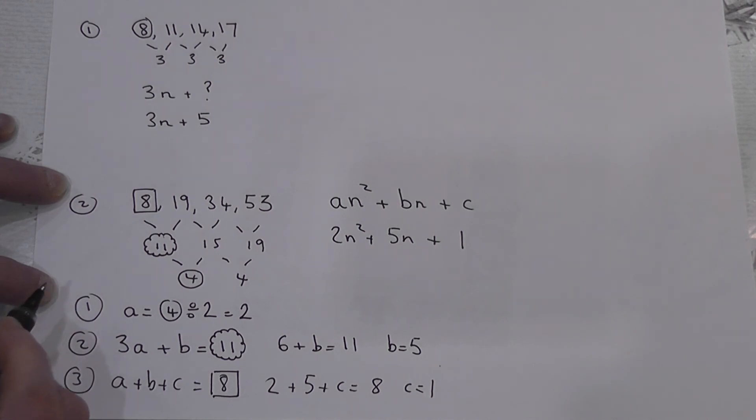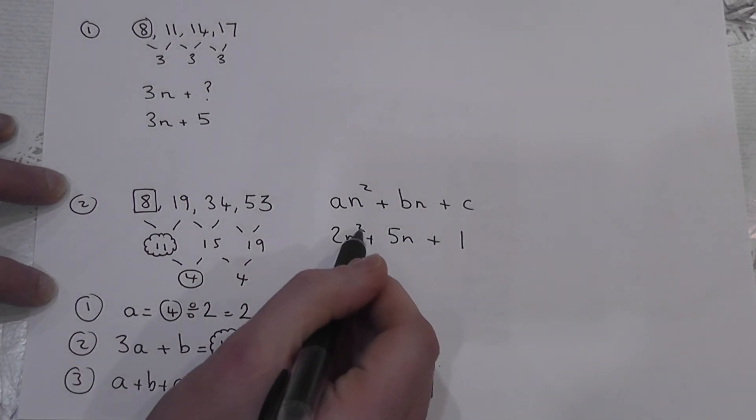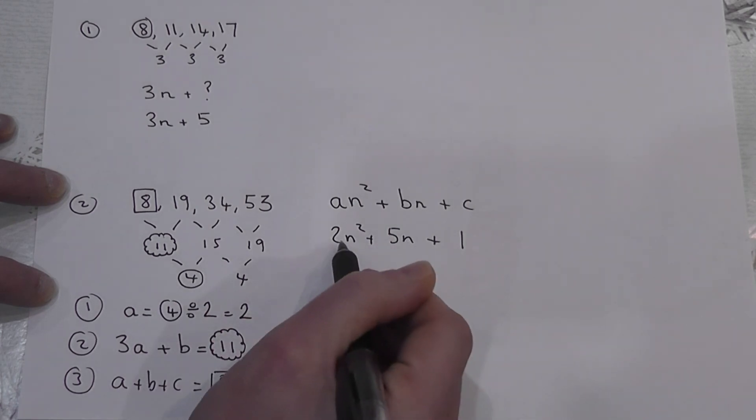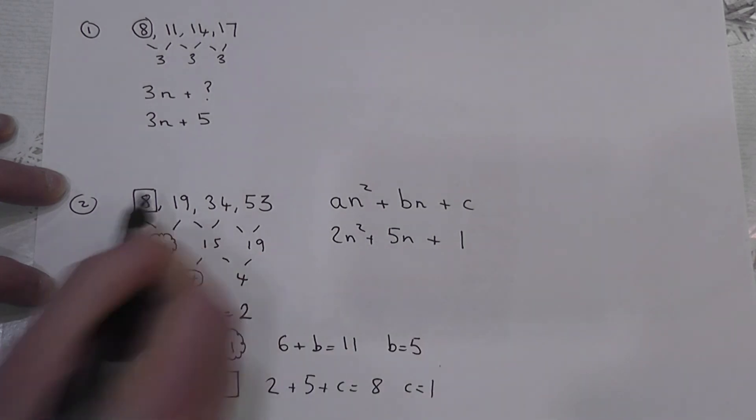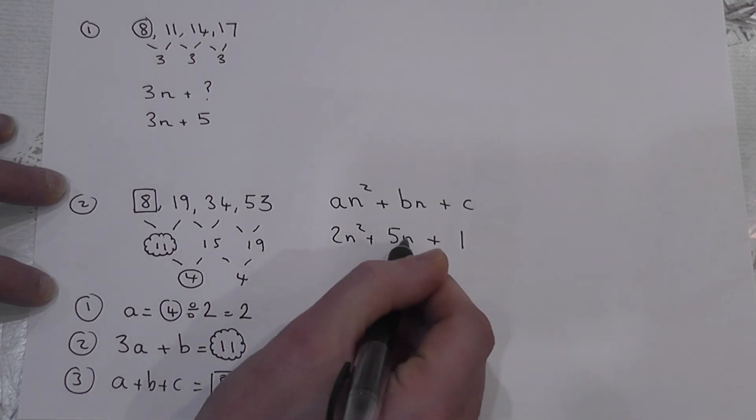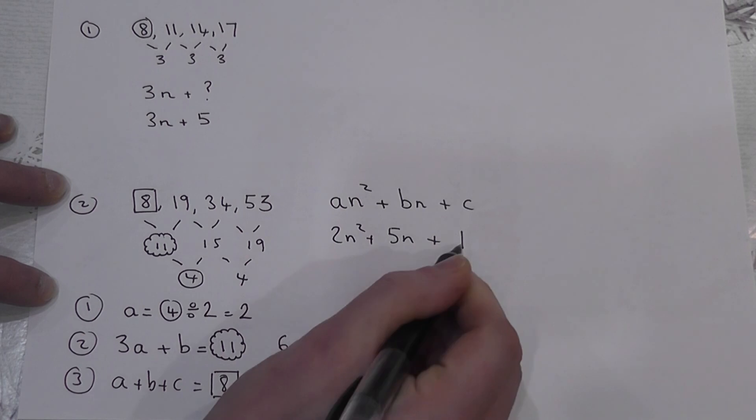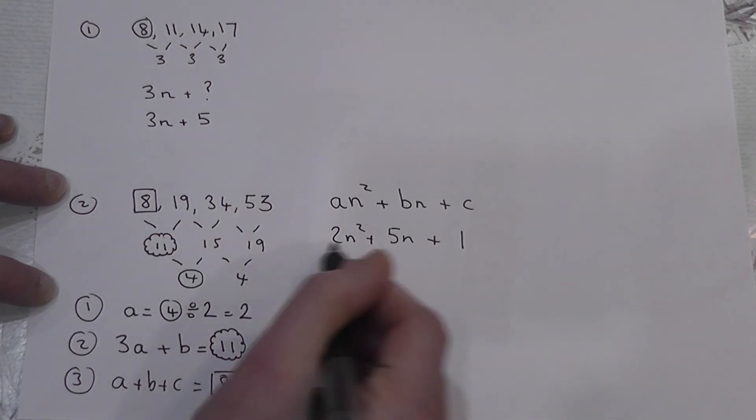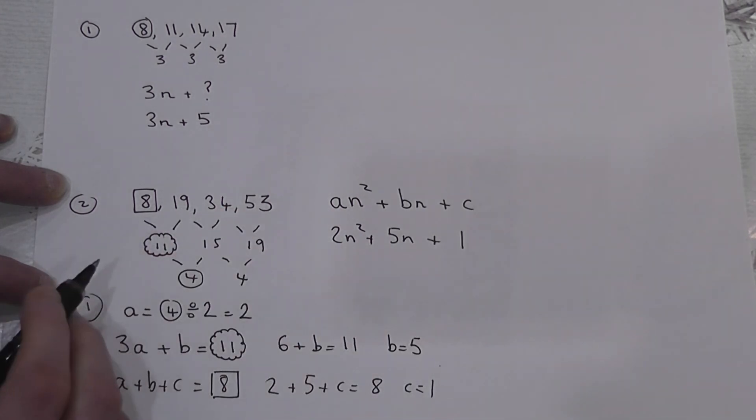To show it works, if n is 1, 1 squared is 1, times 2 is 2. 5 times 1 is 5. 2 plus 5 plus 1 makes 8. If n is 2, 2 squared is 4. 2 times 4 is 8. 5 times 2 is 10. 8 plus 10 plus 1 is 19. So this formula generates the sequence.